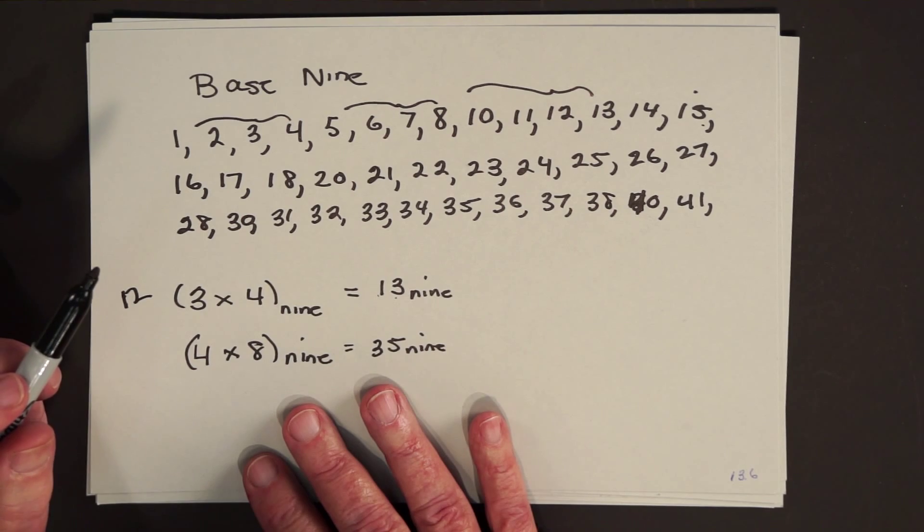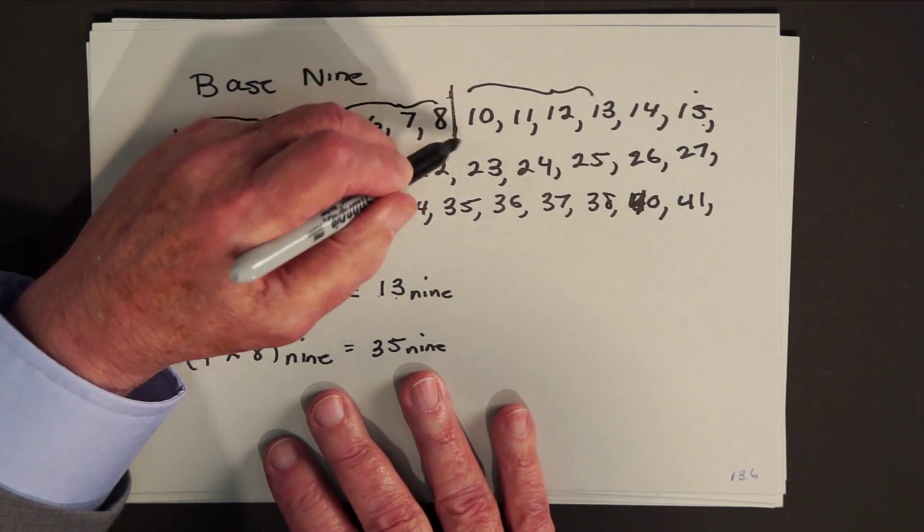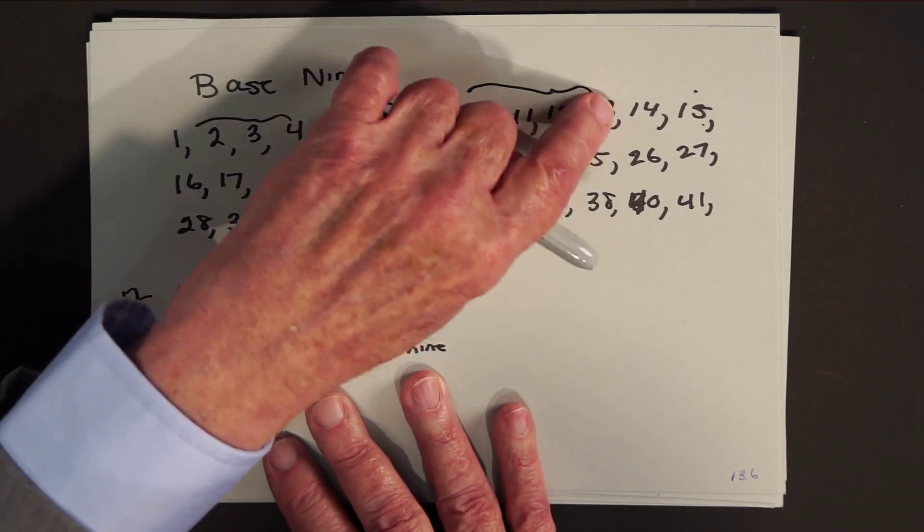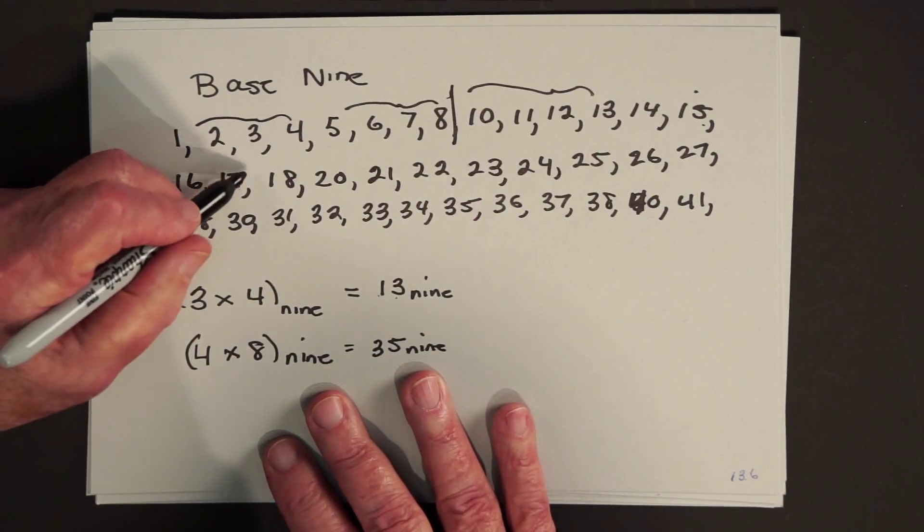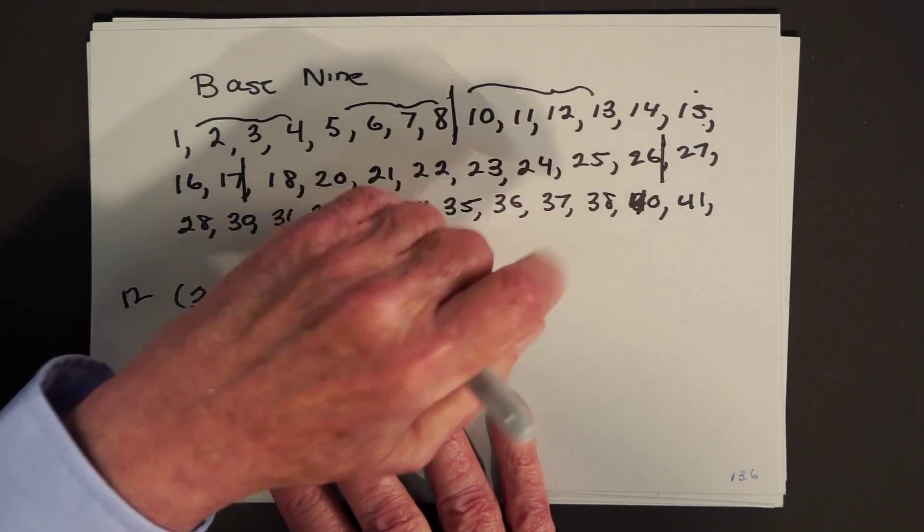What would 4 times 8 be? Well, now you would take 4 groups of 8. Here's one group of 8, 1, 2, 3, 4, 5, 6, 7, 8. Here's two groups of 8, 1, 2, 3, 4, 5, 6, 7, 8. Here's three groups of 8, 1, 2, 3, 4, 5, 6, 7, 8.